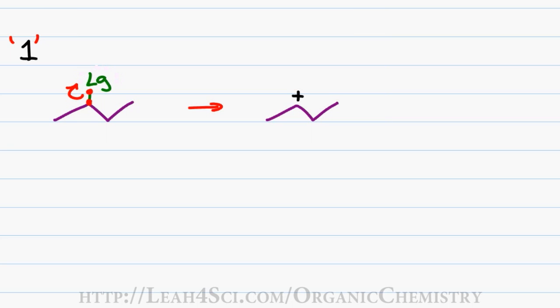Assuming all factors allow for the carbocation to form, the speed of this reaction will be determined by the leaving group's willingness to leave.